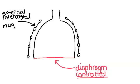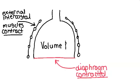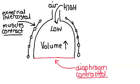Moving the ribs up and out will result in an increase in volume in the lungs, which will reduce the pressure relative to the outside atmosphere. The difference in pressure from high to low means that air will move into the lungs, resulting in inspiration.